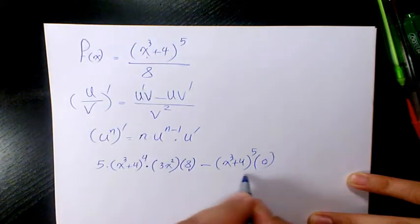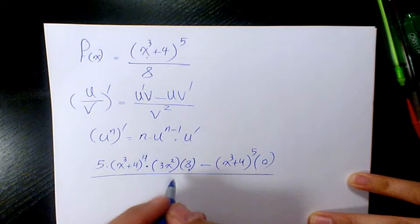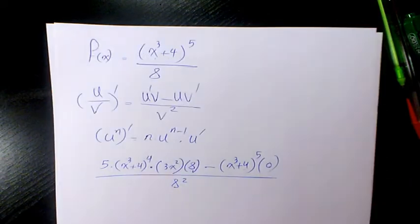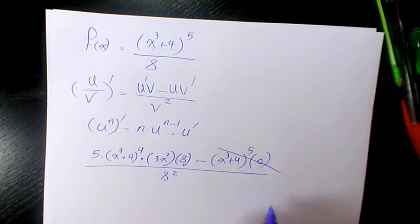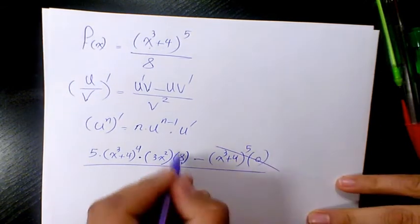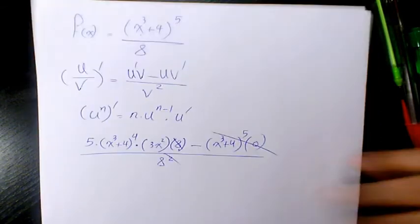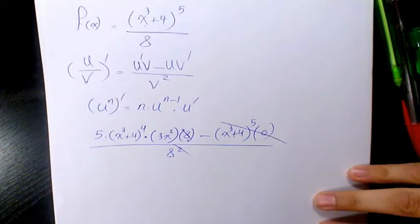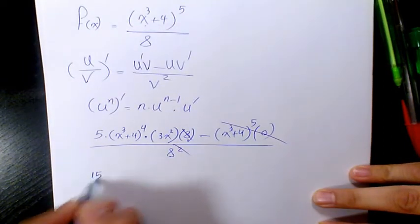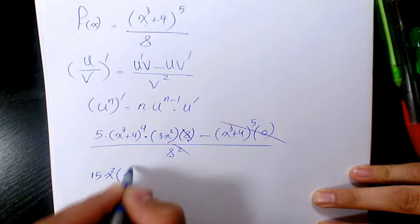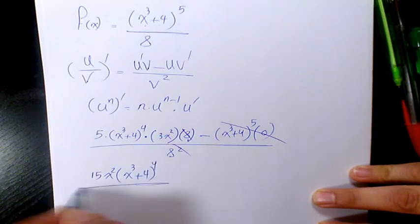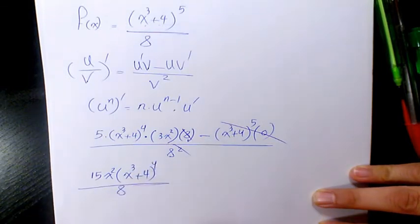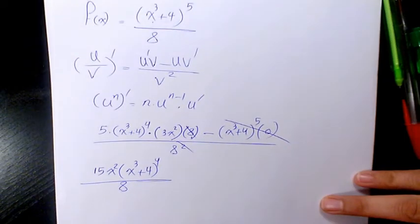Divided by v squared, which is 8 squared. The term with 0 drops out, and 8 and 8 squared cancel, leaving us with 15x² times (x³ + 4)⁴ divided by 8. That's going to be the final answer to this first differentiation question.